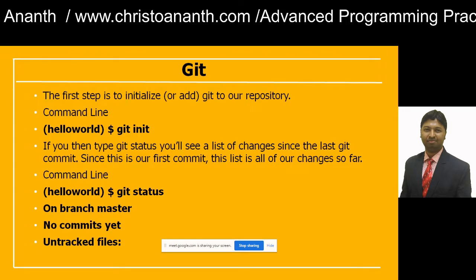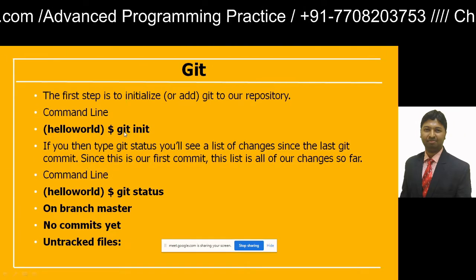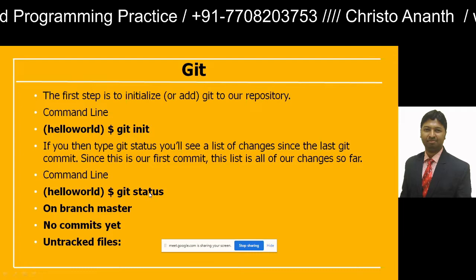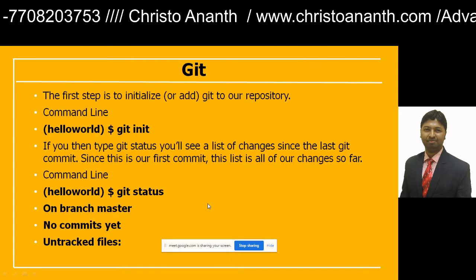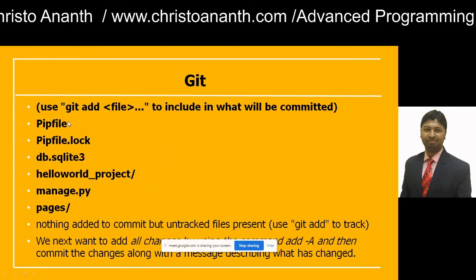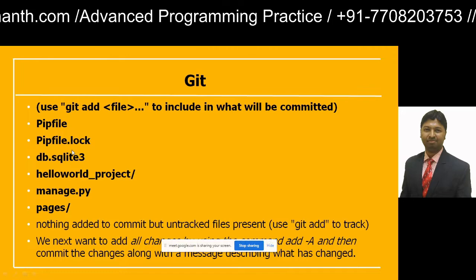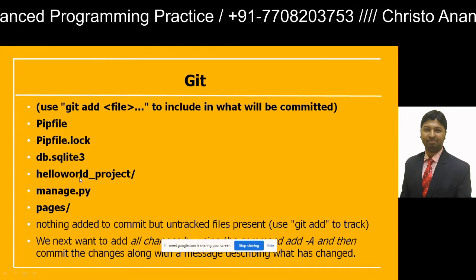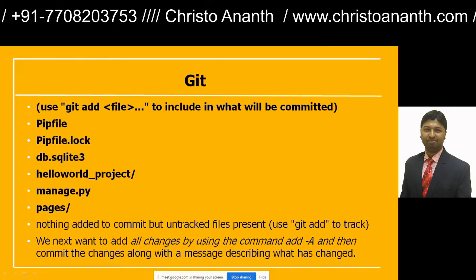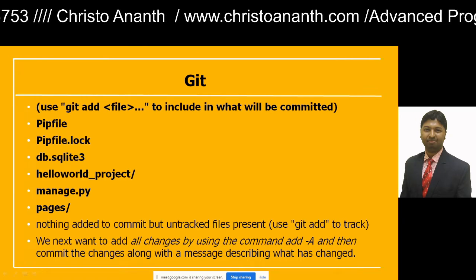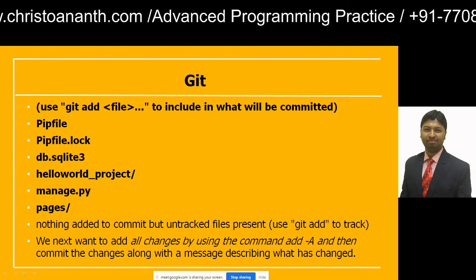After git init you run git status and see: on branch master, no commits yet, and untracked files. The untracked files include: Pipfile, Pipfile.lock, db.sqlite3, hello_world_project, manage.py, and the pages directory. Nothing is added to commit yet, but the untracked files are present. To track them, run: dollar git add -A to add all changes.